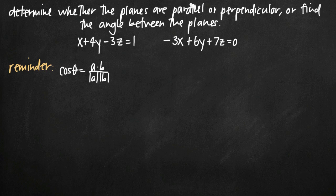What we need to remember about finding the angle between planes and deciding whether or not they're parallel or perpendicular is that we can use the normal vector of each plane. As opposed to figuring out whether or not the planes themselves are parallel, if the two planes are parallel to each other, their normal vectors are also parallel. The normal vector is the vector which is perpendicular to the plane.